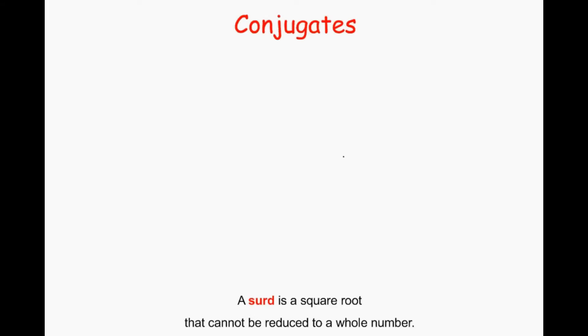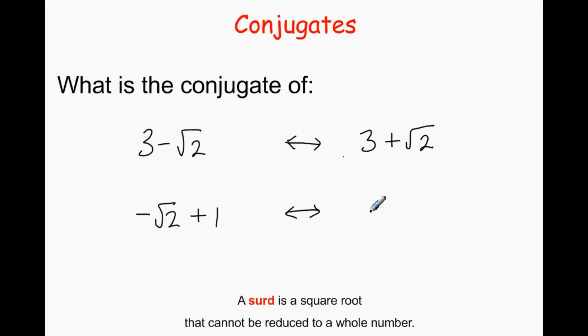These are called conjugates, where you have the sign of the difference between the square roots. So the conjugate of 3 minus root 2 is 3 plus root 2. The conjugate of minus root 2 plus 1 is plus root 2 plus 1.